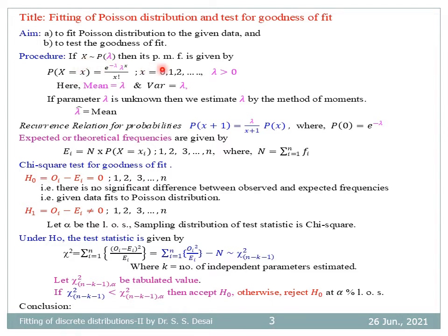The required theory and formulae for Poisson distribution: if X follows Poisson distribution with parameter lambda, then its PMF is P(X = x) = e^(−λ) · λ^x / x!, for x = 0, 1, ..., ∞ and lambda positive. Mean equals lambda and variance equals lambda. We estimate parameter lambda as lambda-hat equal to the mean of the given data. The recurrence relation for probabilities is P(x+1) = [λ/(x+1)] · P(x), where P(0) = e^(−λ). Expected frequencies E_i = N · P(x_i).